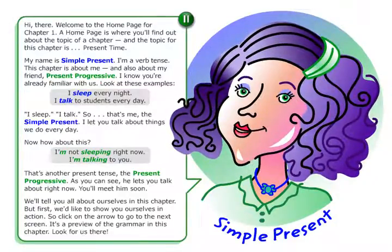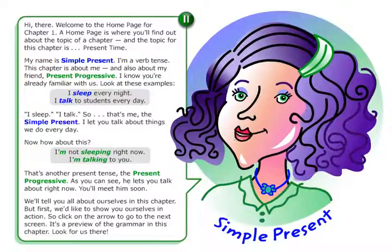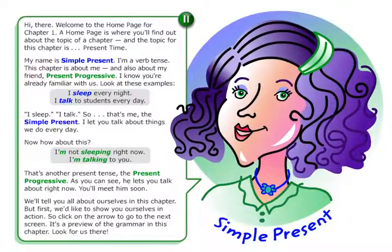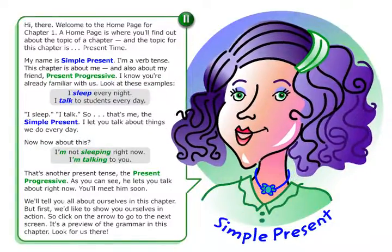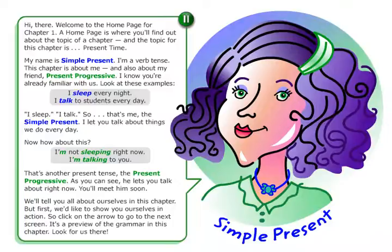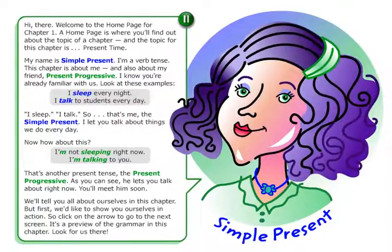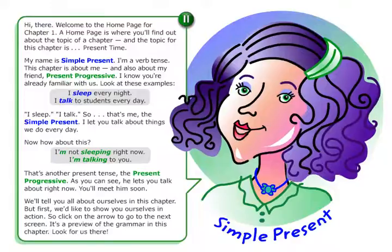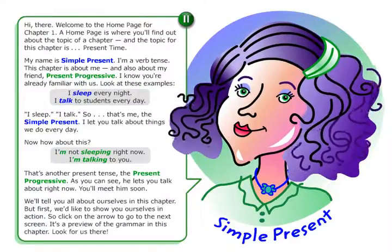We'll tell you all about ourselves in this chapter. But first, we'd like to show you ourselves in action. So click on the arrow to go to the next screen. It's a preview of the grammar in this chapter. Look for us there.